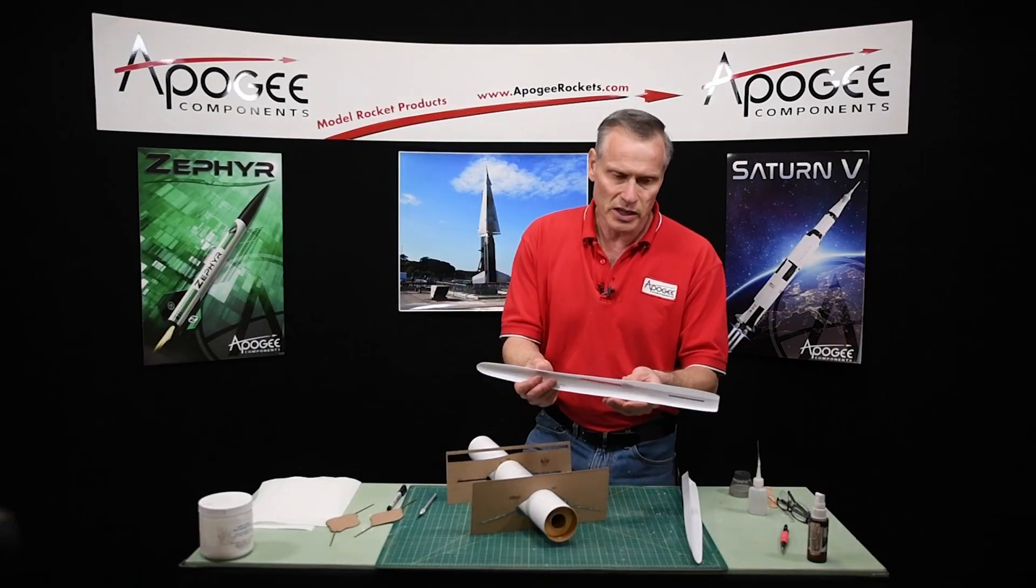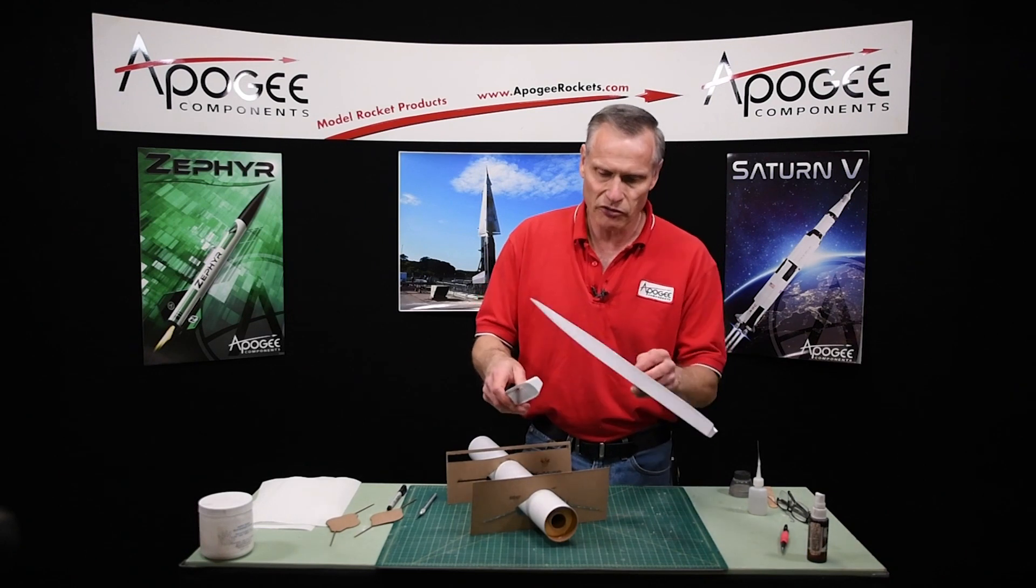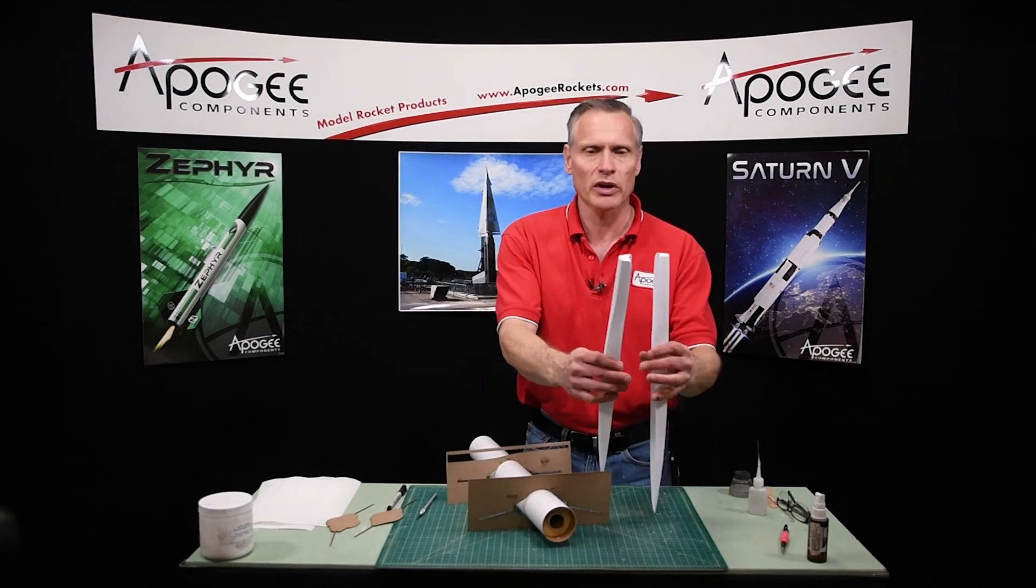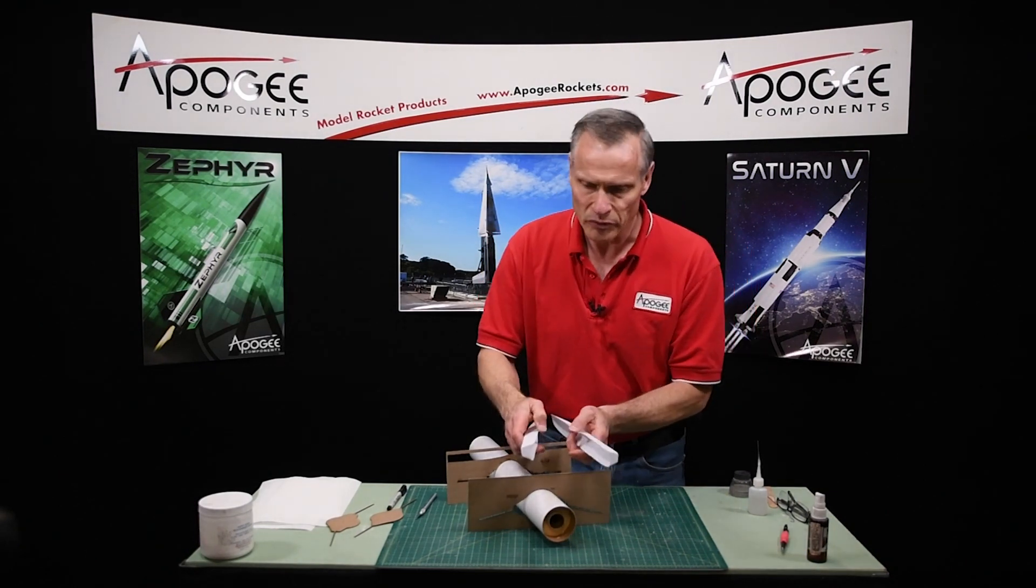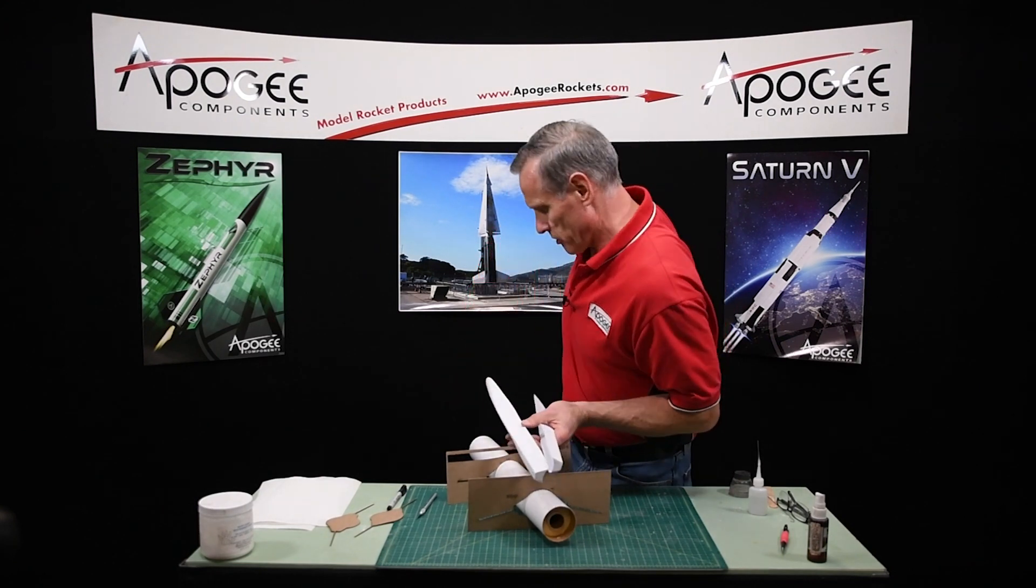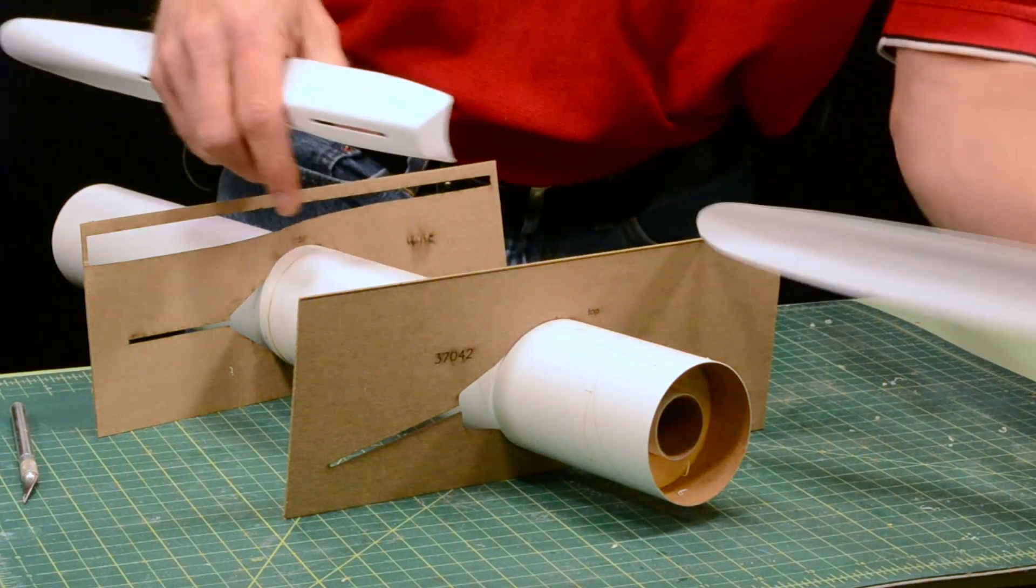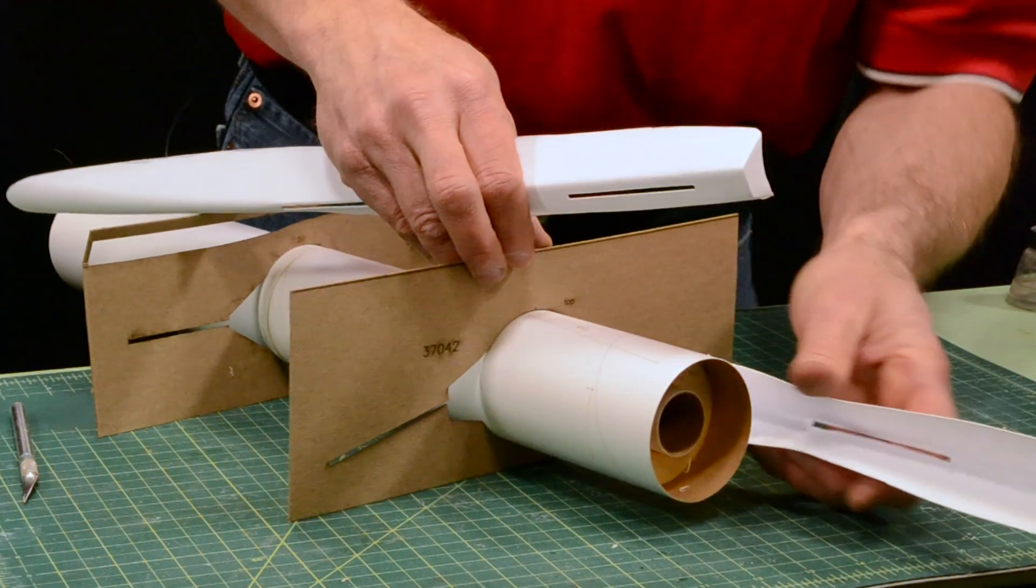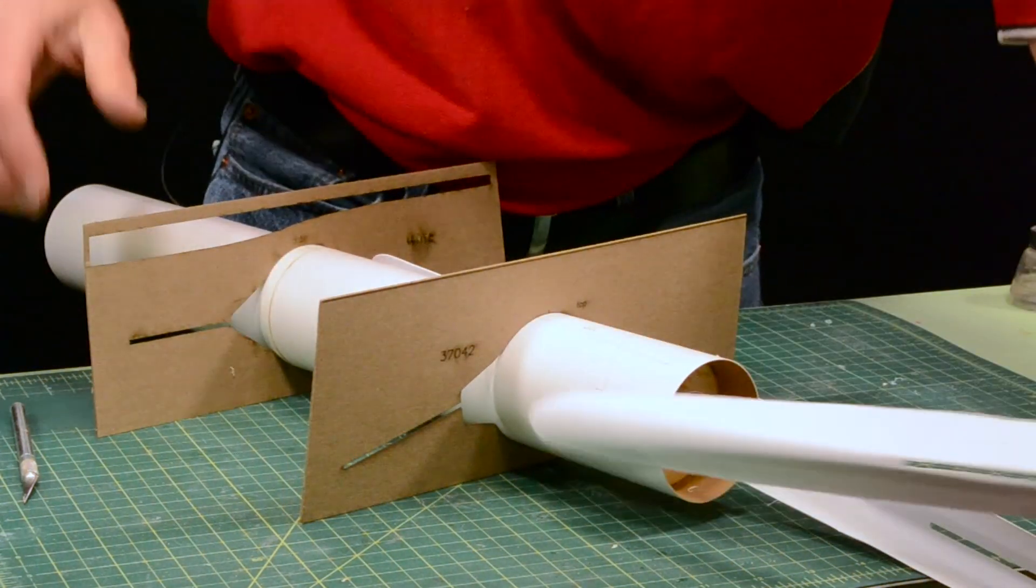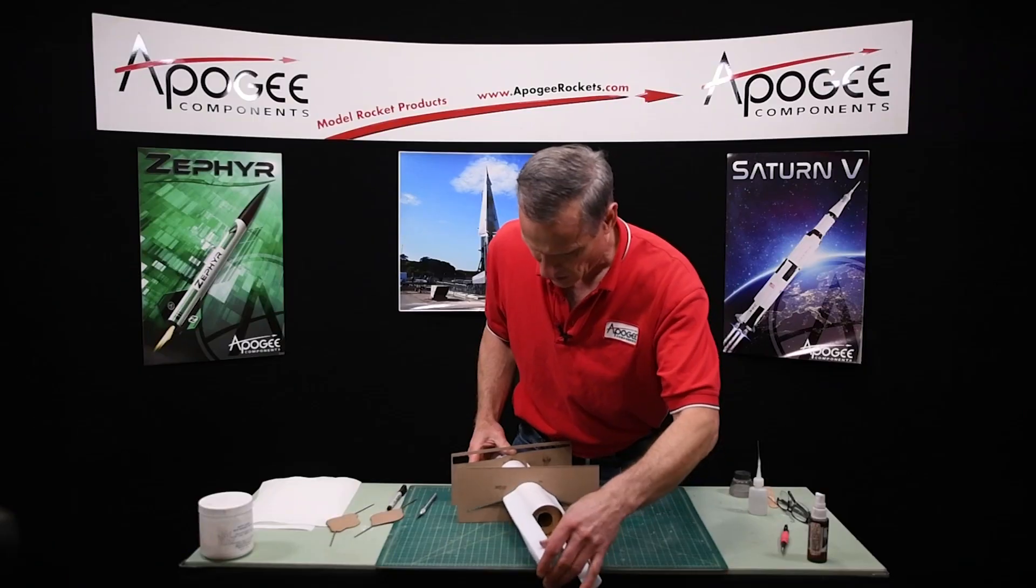And then we're going to take these and we need to find out which is the left and which is the right. You can see that this is my right, this is the right side of the rocket. It will be angled downwards just a little bit. We're going to stick those in there like that.